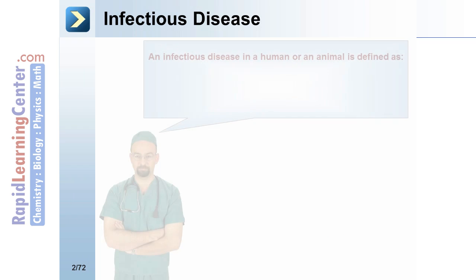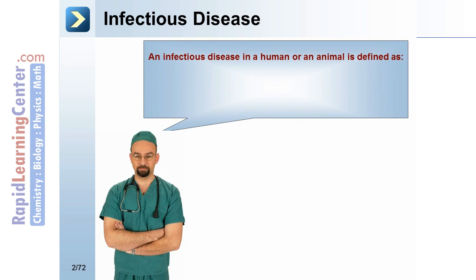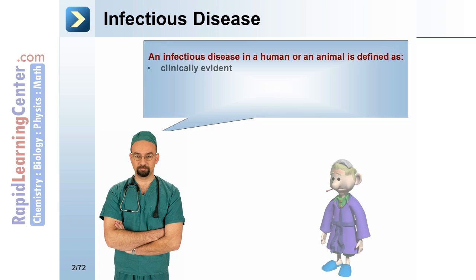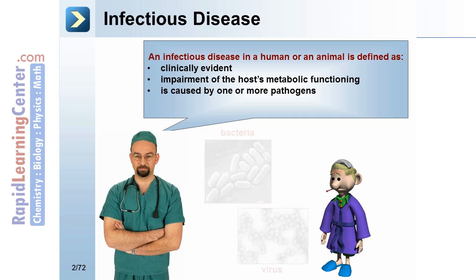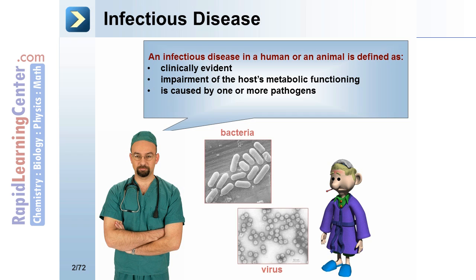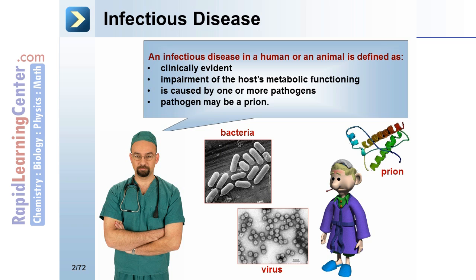Infectious disease. An infectious disease in a human or an animal is defined as: 1. Clinically evident. 2. Impairment of the host's metabolic functioning. 3. Is caused by one or more pathogens. The pathogen may be a prion.